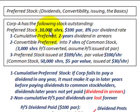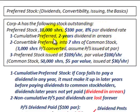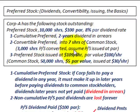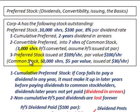For our preferred stock, there are 10,000 shares with a $100 par value and an 8% par dividend rate. The first case is cumulative preferred with two years of dividends in arrears. The second case is convertible preferred, converting into seven shares of common stock for 3,000 shares. The third case is preferred stock issued at $109 per share. For reference, common stock has 50,000 shares, $5 par value, issued at $30 per share.